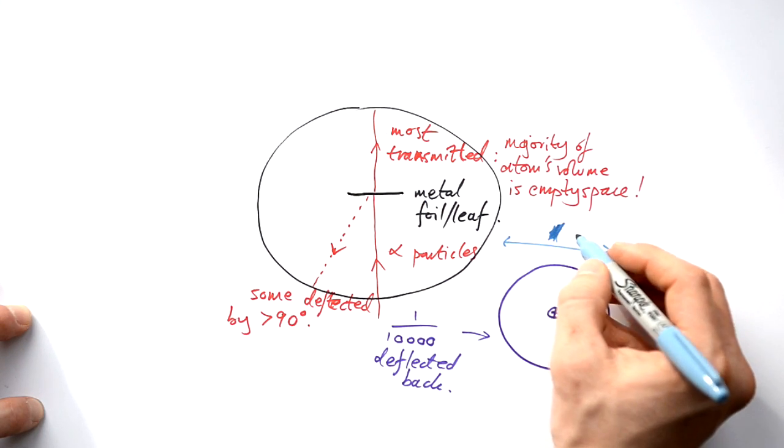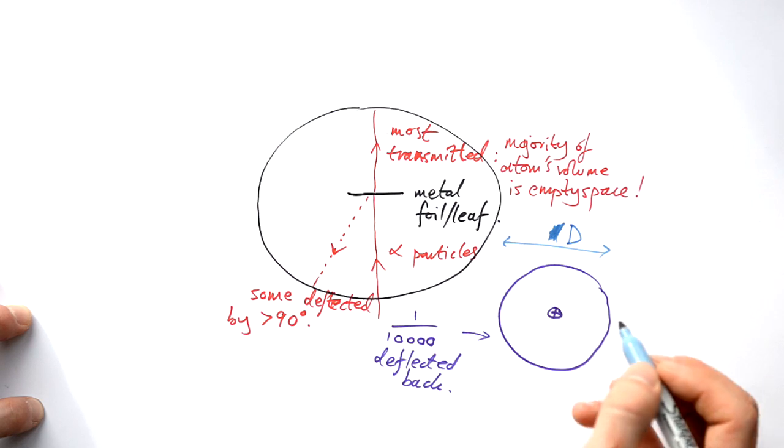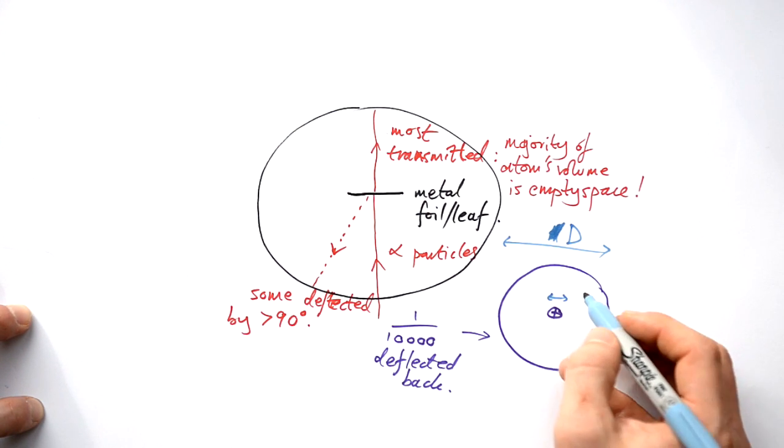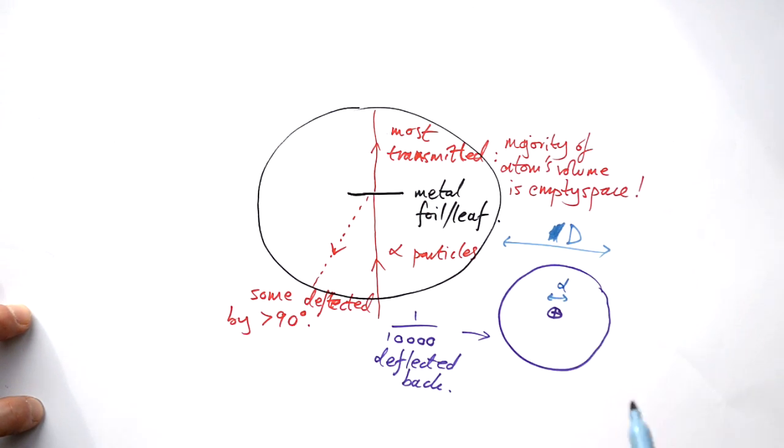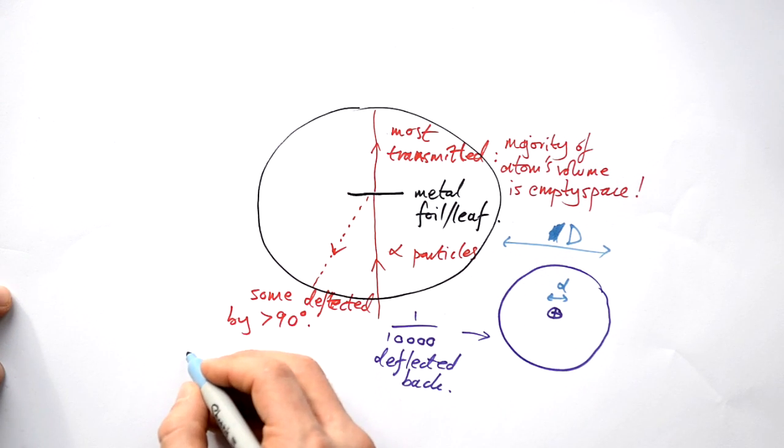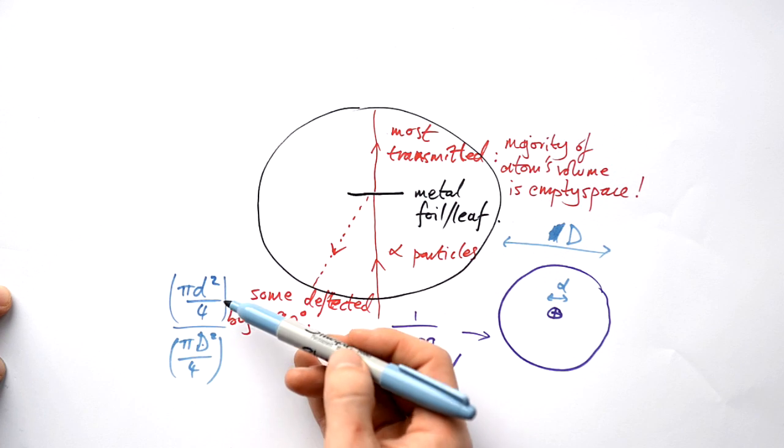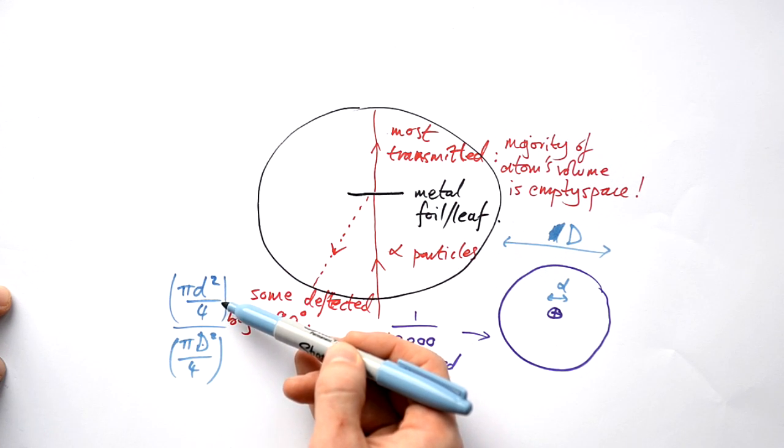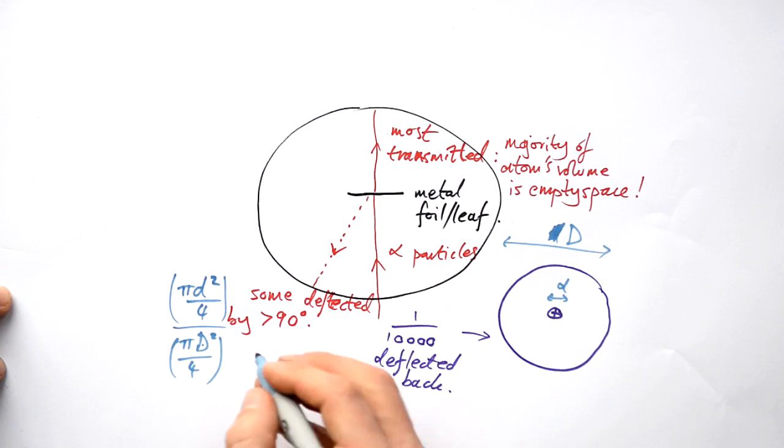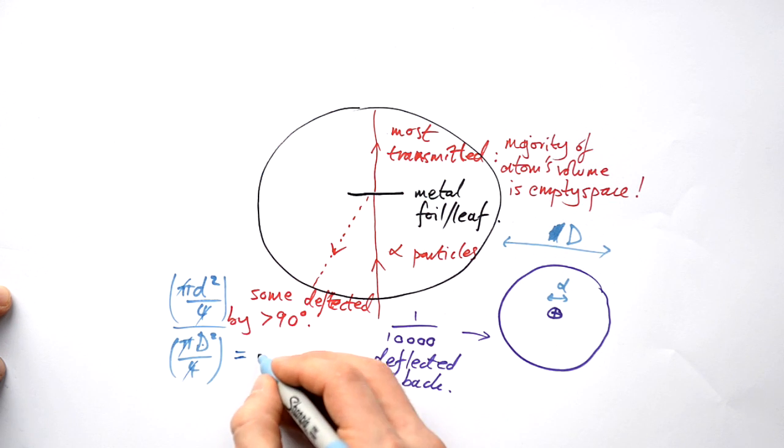If we call the diameter of our whole atom capital D and the diameter of this positive bit in the middle, this nucleus little d, the size of the whole target is going to be πD²/4. So we have the area of the nucleus, this positive bit divided by the area of the whole atom, but naturally all of these things cancel here. So we end up with d²/D², same ratio. That's equal to 1/10,000.